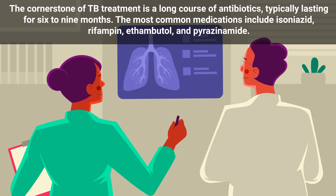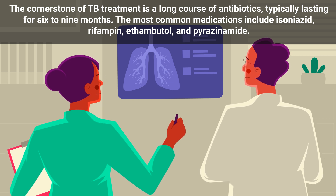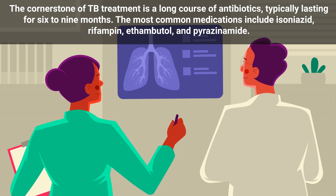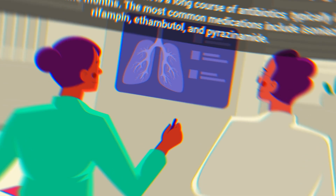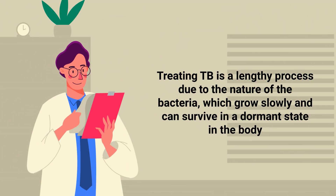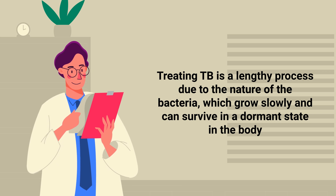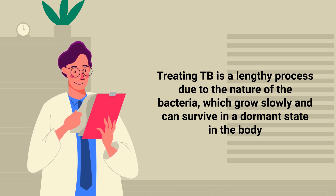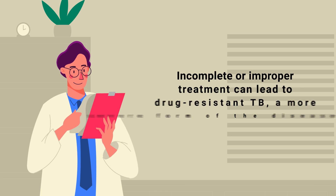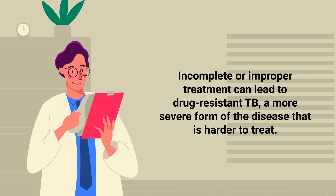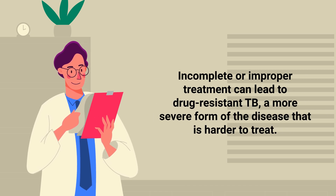The most common medications include isoniazid, rifampin, ethambutol, and pyrazinamide. Treating TB is a lengthy process due to the nature of the bacteria, which grows slowly and can survive in a dormant state in the body. Incomplete or improper treatment can lead to drug-resistant TB, a more severe form of the disease that is harder to treat.